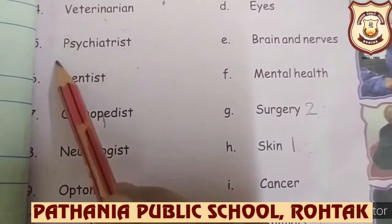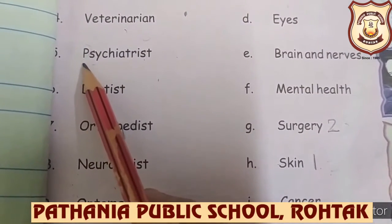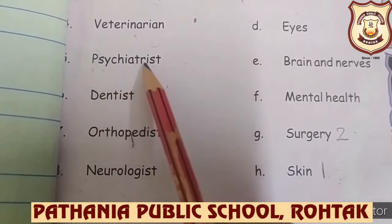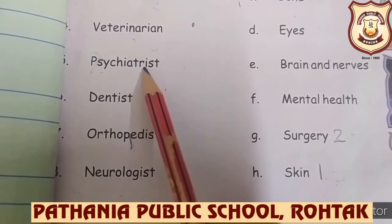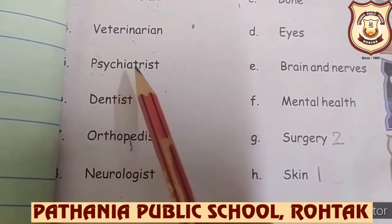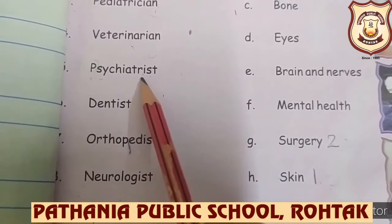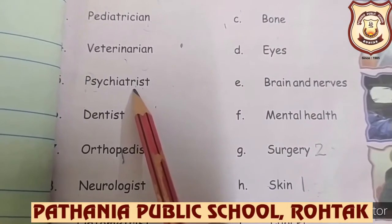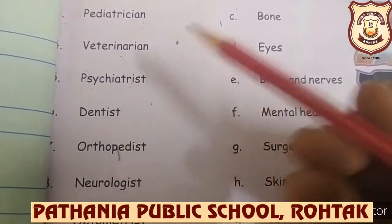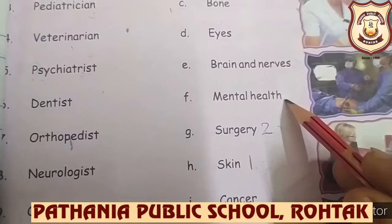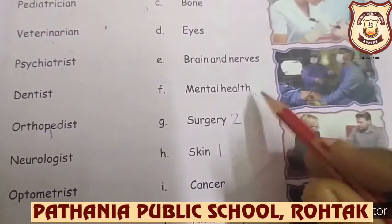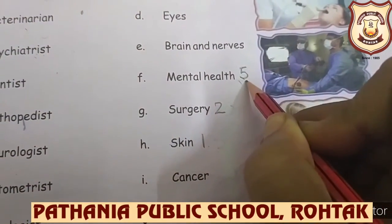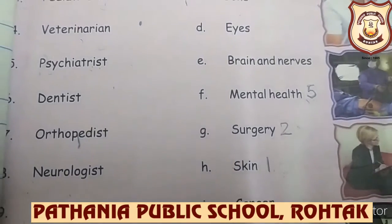Number five: Psychiatrist — note that the 'P' is silent. A psychiatrist treats mental illness. So for number five, in front of 'mental health,' you have to write number five.